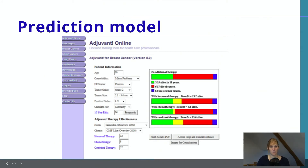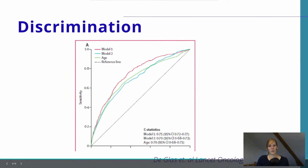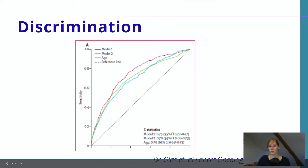Here we are really looking at external validation. To briefly refresh your memory: what is a receiver operating curve? Sensitivity is on the y-axis, and 1 minus specificity is on the x-axis. The perfect model would sit at the top left corner, with the highest sensitivity and highest specificity. If you need a refresher on sensitivity and specificity, I have a previous video on that topic. The worst possible model — equivalent to flipping a coin, where the chance of being right is always 50% — is represented by the dotted line in the middle.